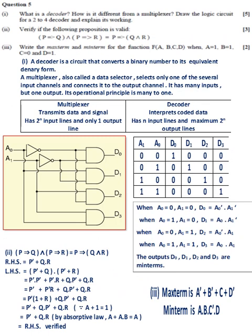Question 5, Part 1: A decoder is a circuit that converts a binary number to its equivalent denary form. A multiplexer, also called a data selector, selects only one of the several input channels and connects it to the output channel. It has many inputs but one output. Its operational principle is many to one. A multiplexer transmits data and signal. A decoder interprets coded data. A multiplexer has 2 to the power n input lines and only one output line. A decoder has n input lines and maximum 2 to the power n output lines.